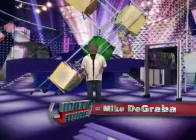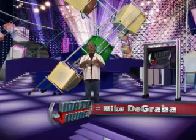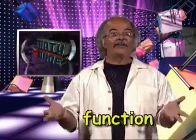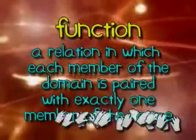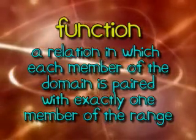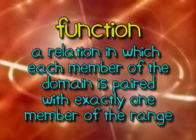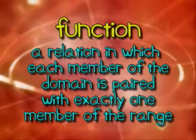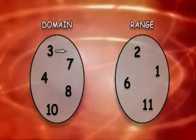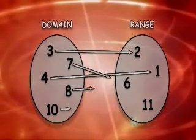When the members of two sets of numbers are paired together, you have what's called a relation. A function is a relation in which each member of the domain is paired with exactly one member of the range. At its simplest, that means that each member of the domain, the first set, chooses one and only one member of the range, the second set.